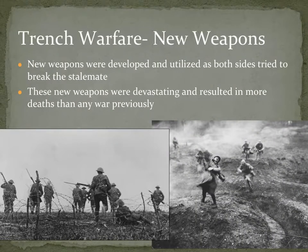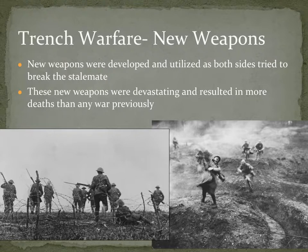The key thing to understand about new weapons and tactics is that these new weapons were more deadly than anything used in warfare before — that's why this war resulted in more deaths than any previous war. These pictures illustrate the tactics of trench warfare, where men are coming out of their trench, crossing No Man's Land, and being shot at by the protected side in the other trench. On the Western Front, the war turned into a stalemate due to trench warfare.